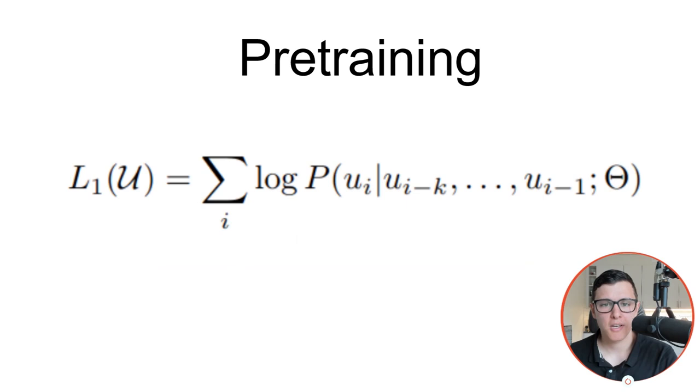More formally, what we want to do is, given some previous words, let these u here represent some previous words, we want to maximize the probability of what the next word should be given the context of previous words and given this parameter theta, which is the model parameters.